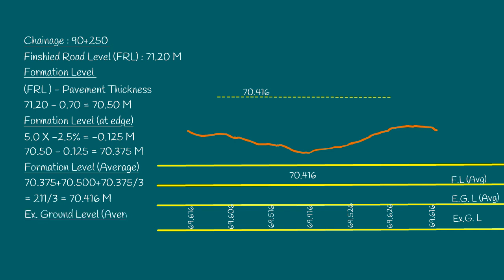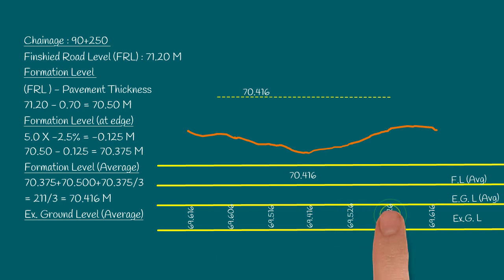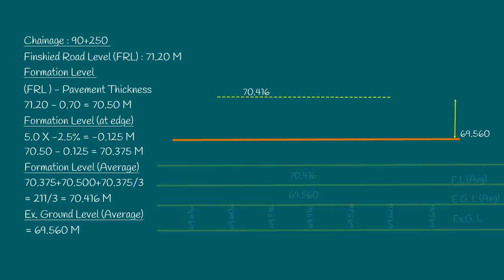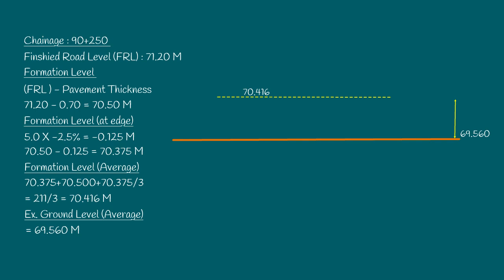To ease the calculations, let us take the average of the existing ground levels, which is 69.416 plus 69.516 plus 69.616 plus 69.526 plus 69.626 plus 69.616, divided by 7, equals an average existing ground level of 69.56 meters. Now let us check the average depth of filling, also known as the embankment height. Average formation level minus average existing ground level gives the average depth of filling, which is 70.416 minus 69.56, equal to 0.856 meters.